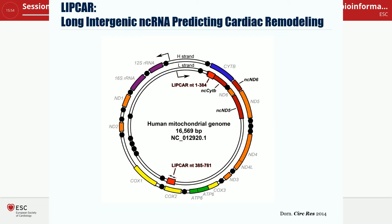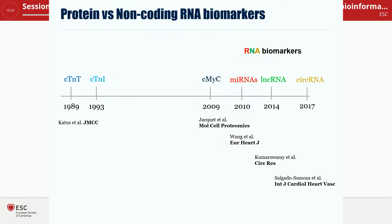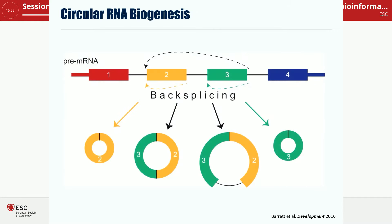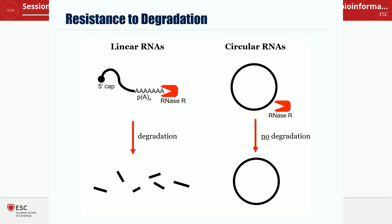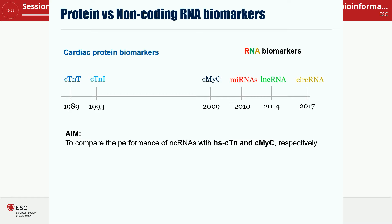This is LIPCAR — described by Thomas Thum's group — standing for long intergenic non-coding RNA predicting cardiac remodeling. It is a long non-coding RNA in the human mitochondrial genome, and the idea was that it may be released in response to cardiac injury because cardiac tissue is very rich in mitochondria. The latest arrivals in the RNA landscape are circular RNAs, generated by back-splicing. These circles have the advantage that unlike linear RNA, they are relatively resistant to degradation — a huge advantage for biomarkers circulating in blood — and we wanted to put this hypothesis to the test with a clash of the titans: proteins against RNA biomarkers.